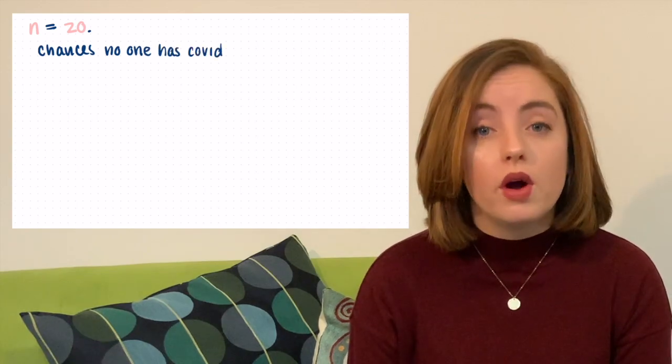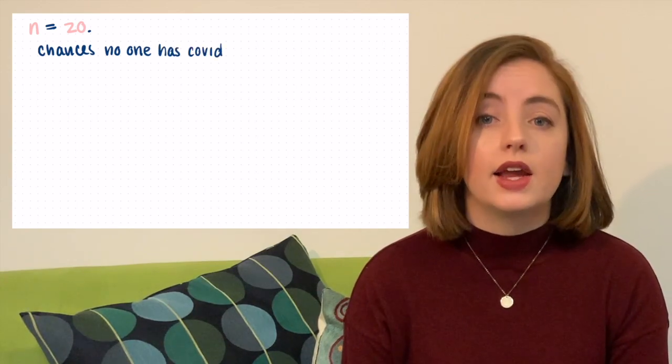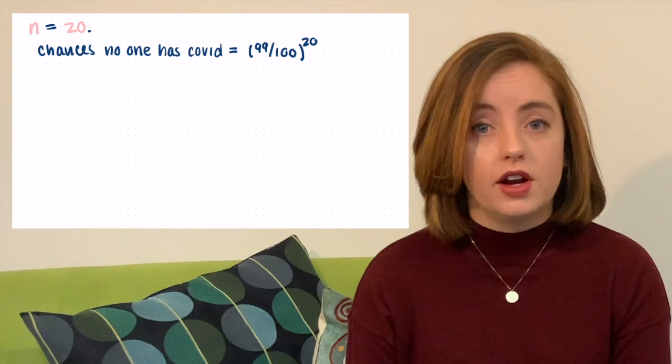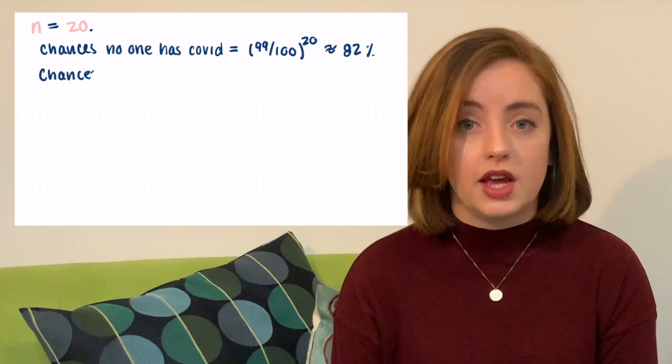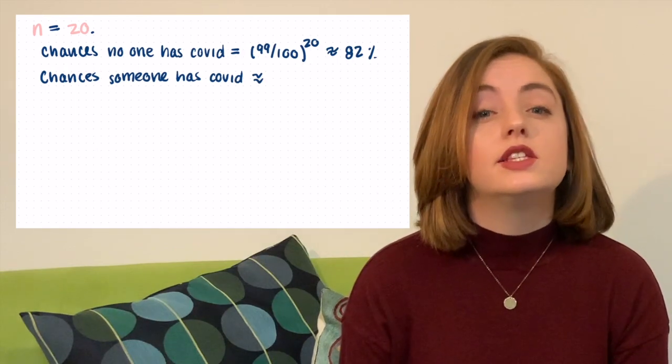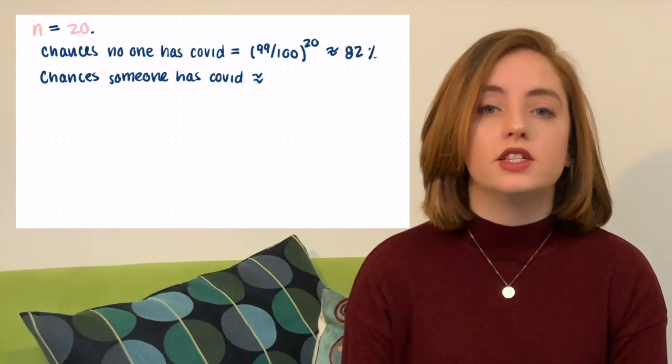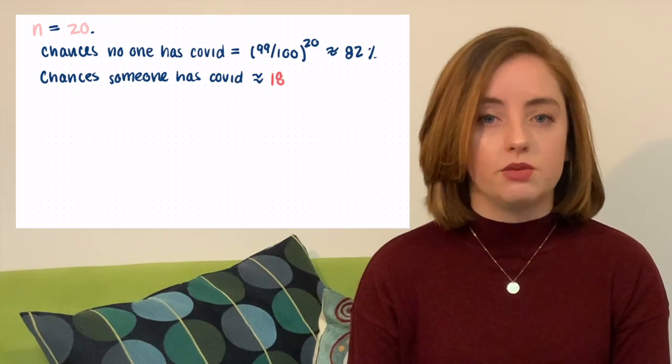Let's scale this up. Suppose you go to a party with 20 people at it. The chances that no one there has coronavirus is 99/100 raised to the 20th power, which is about 82%. So the chances that someone there has COVID is about 18%. This means that approximately one out of every five parties will have a COVID-19 positive person present.